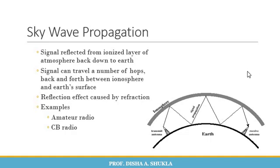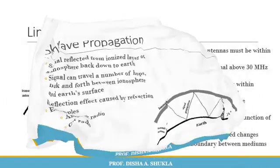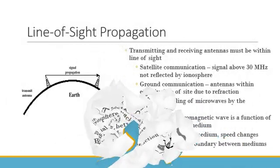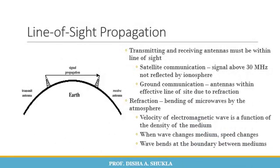An example of sky wave propagation is ionospheric radio and CB radio. Moving on to the next type, which is line of sight propagation, also called space wave propagation.